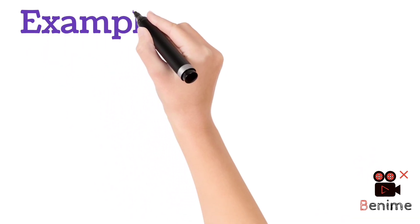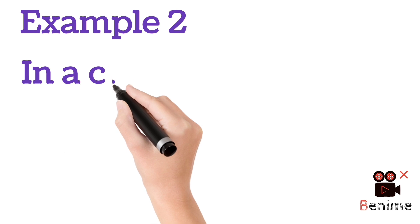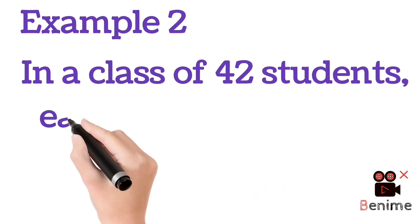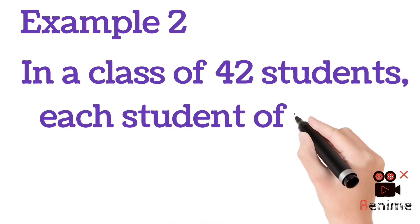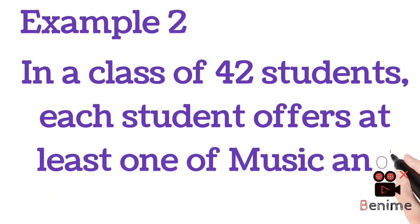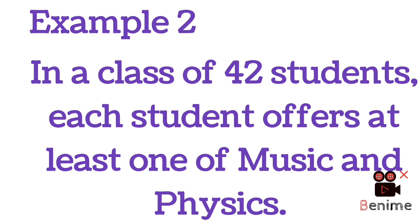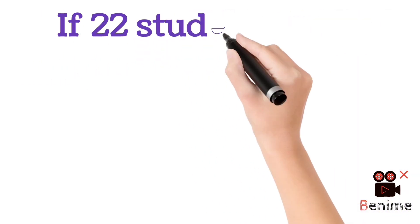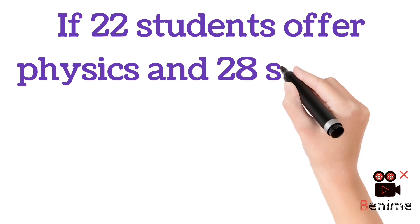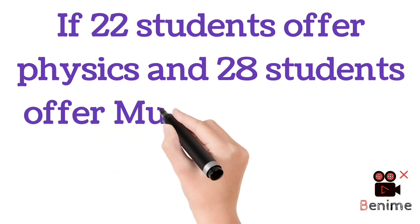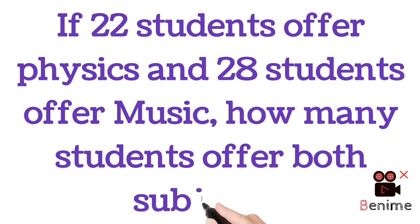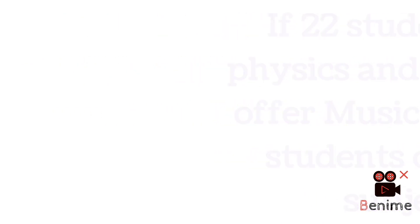Now let's go to Example 2. In a class of 42 students, each student offers at least one of Music and Physics. If 22 students offer Physics and 28 students offer Music, how many students offer both subjects?